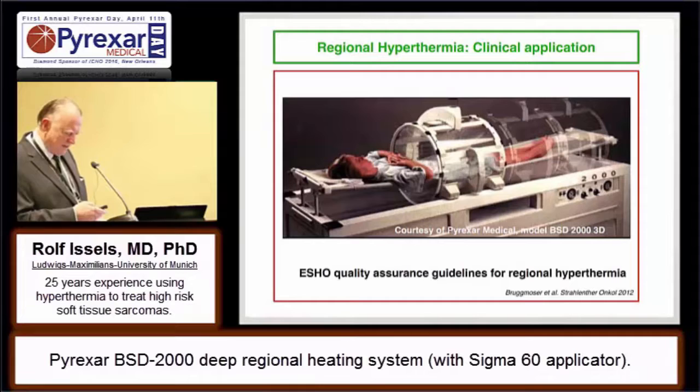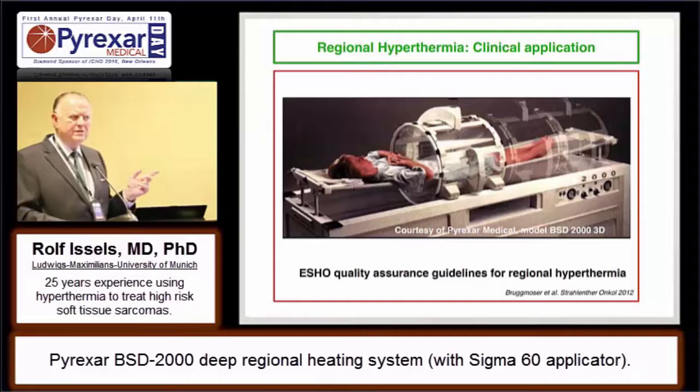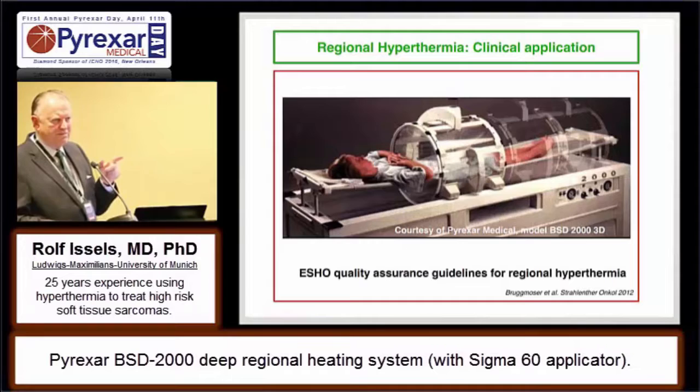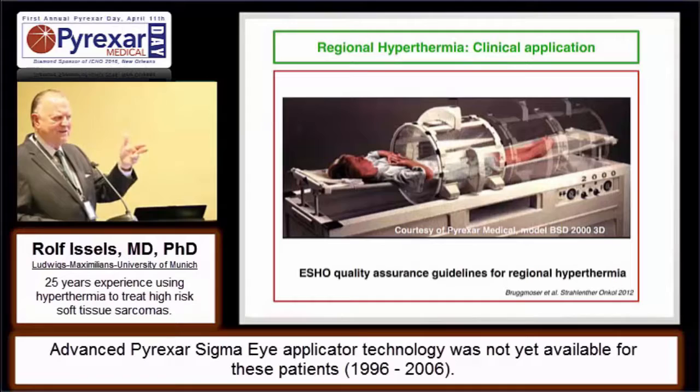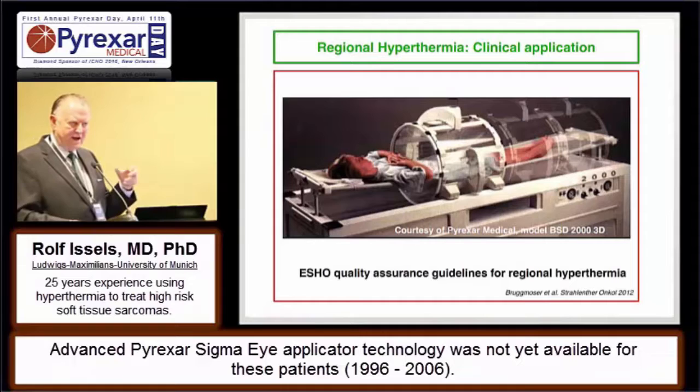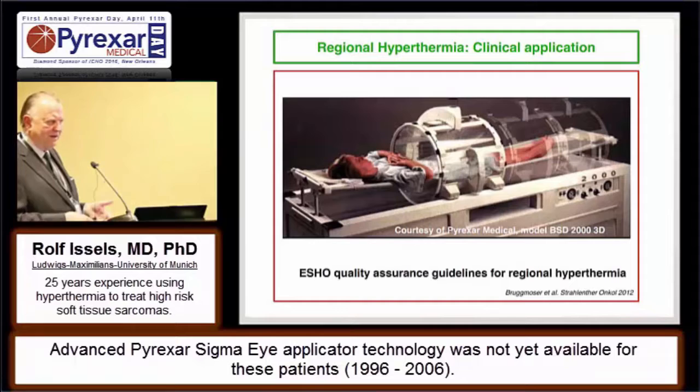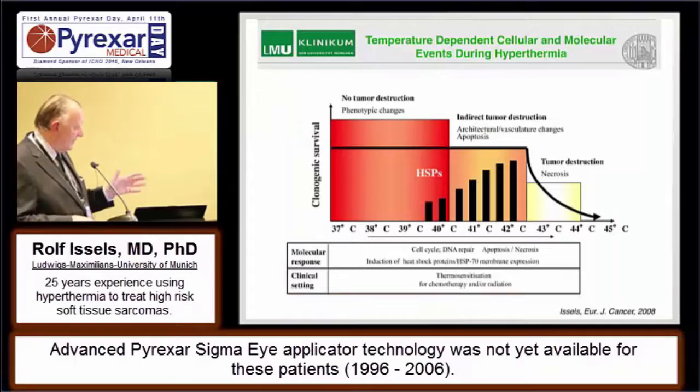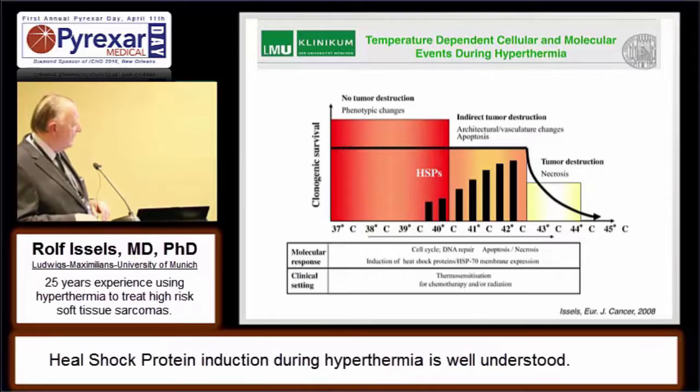This is the old picture — it was the Sigma 60 at that time, not 3D. Most of what I'm presenting is, interestingly, based on the technology which was used from 1996 to 2006. We did not use any hybrid, we did not use the Sigma Eye — we used the simple one. Even the YAPAS was the first patient series. Keep in mind what I said initially: the temperature-dependent cellular molecular events were already summarized in 2008.